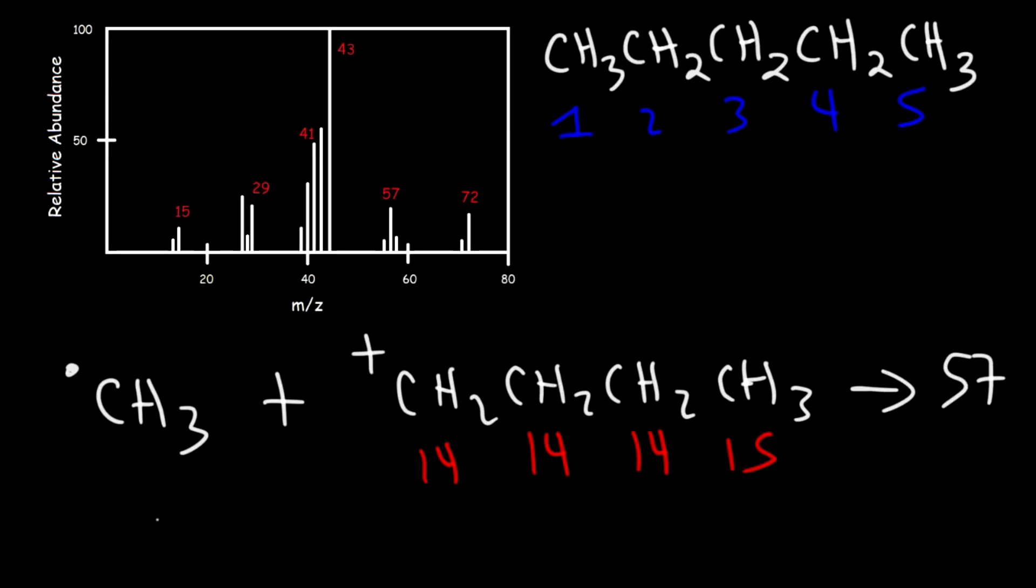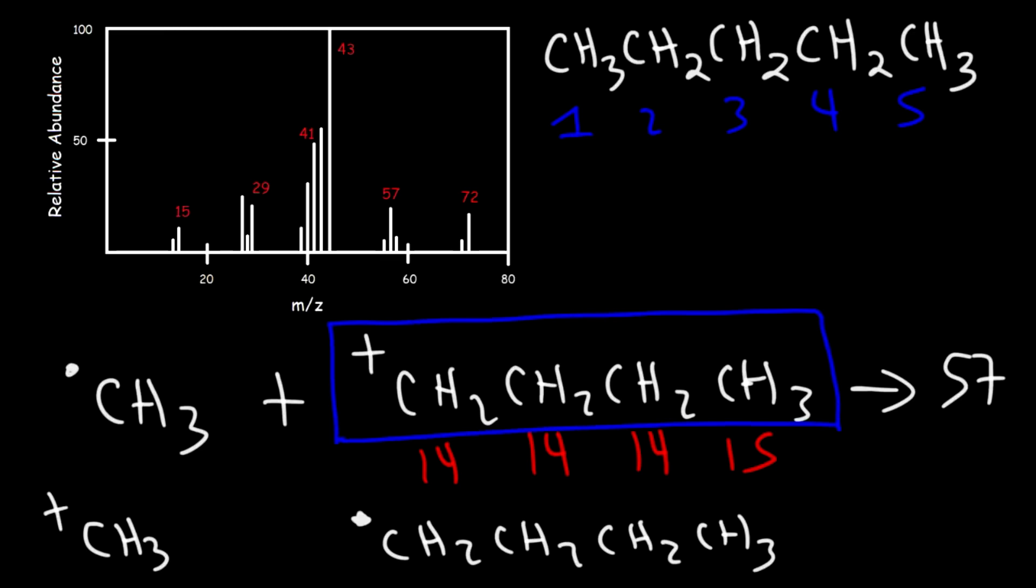We don't always have to get a methyl radical. We could get a methyl cation. If we do get a methyl cation then this molecule will be a radical. It's important to understand that only the positively charged fragments will reach the detector, so the methyl cation could easily correspond to the peak that we see at 15.